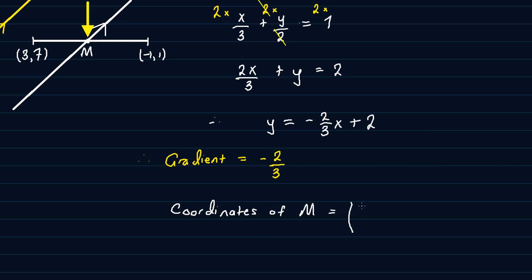So for the coordinates of M, we will use the two points, so that will be (3 + (-1))/2, and (7 + 1)/2.